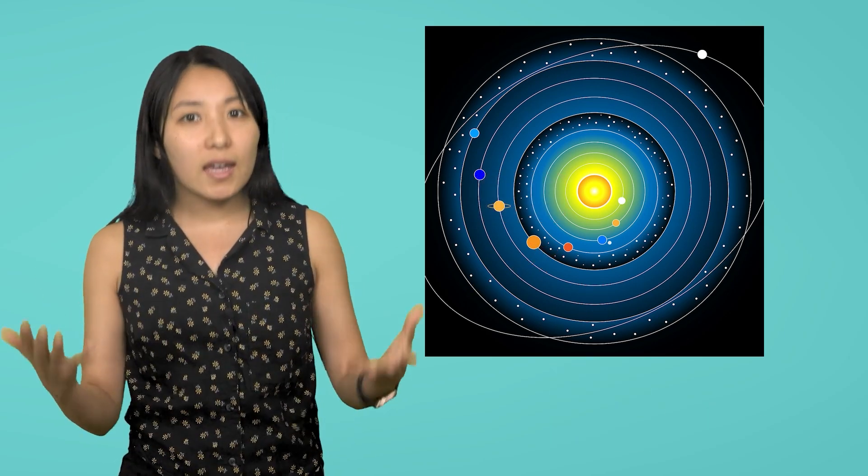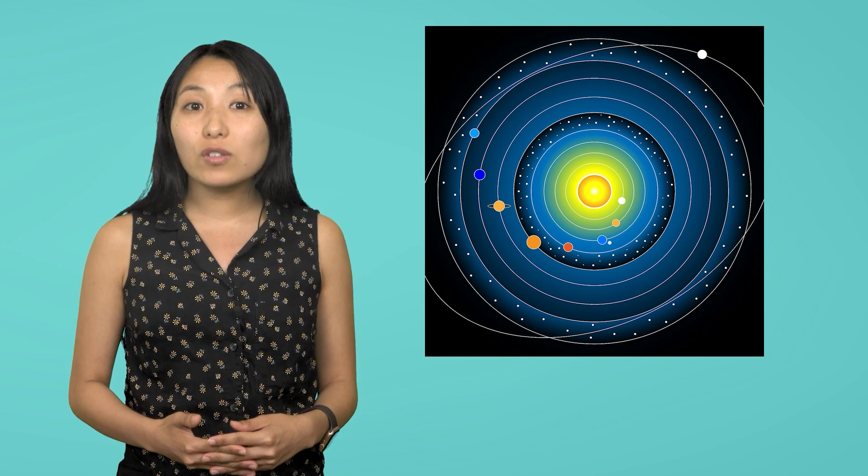Well, if Earth and Mars were moving, that would account for why Mars looks different sometimes.